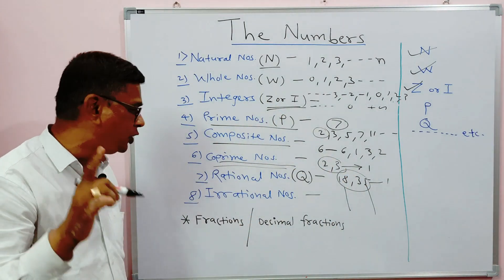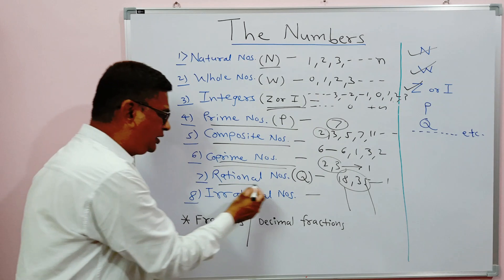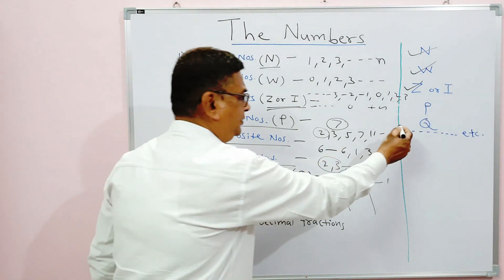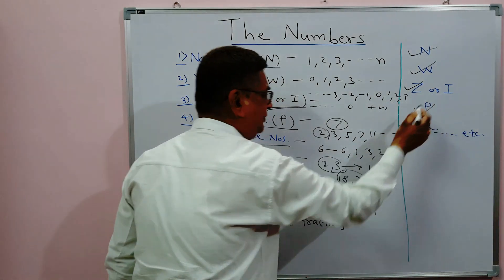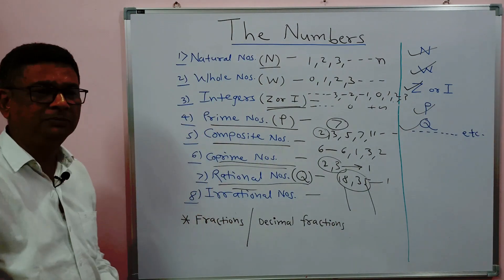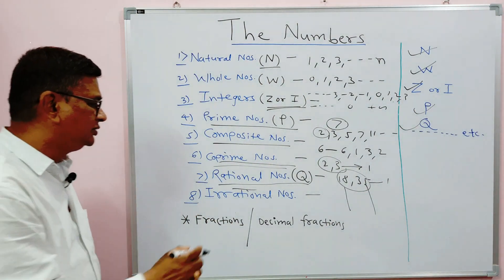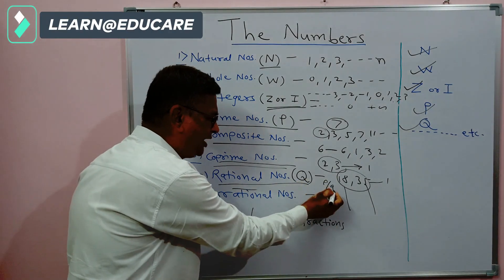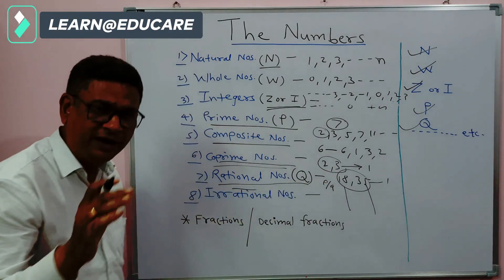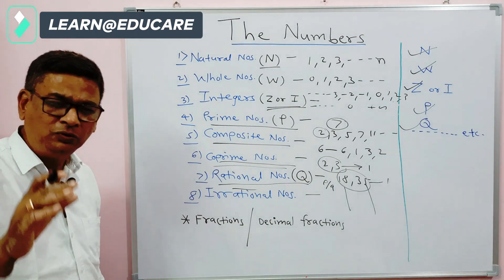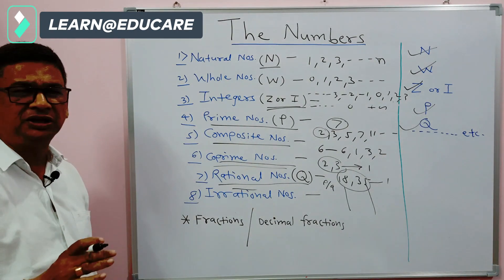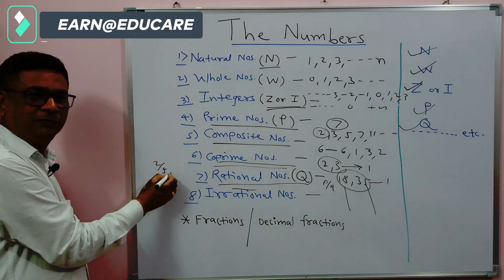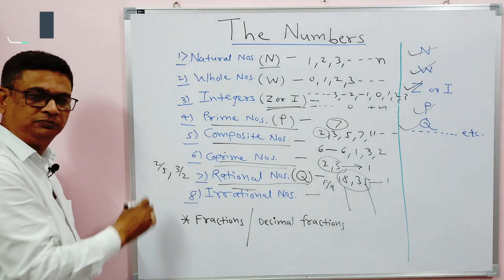The next type is rational numbers. The rational number set is denoted by Q. Rational numbers are the ratio of two integers, written in the form p upon q, where p is an integer and q is also an integer. For example, 2 upon 5 and 3 upon 2 are rational numbers.